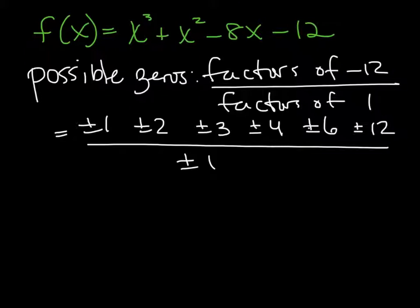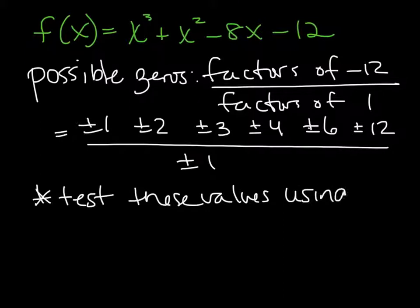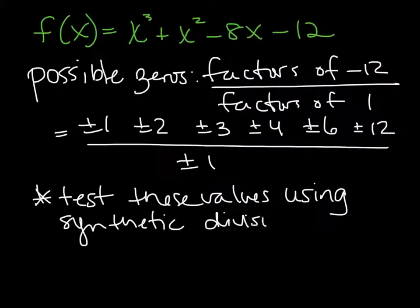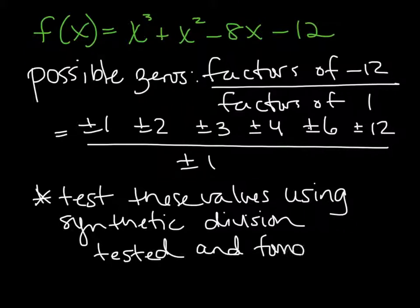So just for sake of time in the video, my next step is to test values using synthetic division to see which one you can find to work that goes in with remainder of 0. So I already tested and found x equals negative 2 to work.